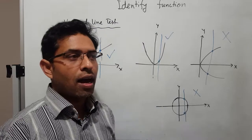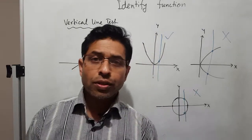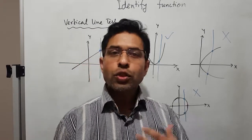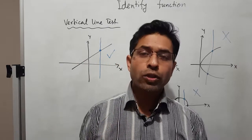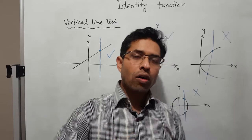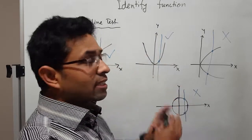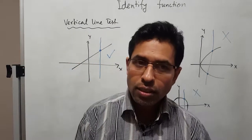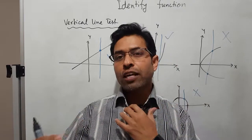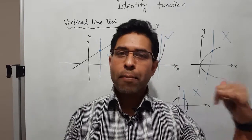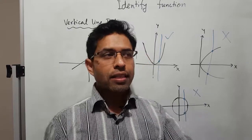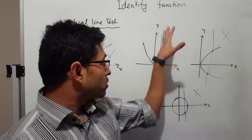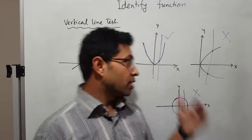I will explain domain and range and how to find them from a given graph in my next video. I'll also make a video on one-to-one and many-to-one functions, which are really important concepts. Here we mostly focused on how to identify a function using two methods: mapping diagrams and the vertical line test.